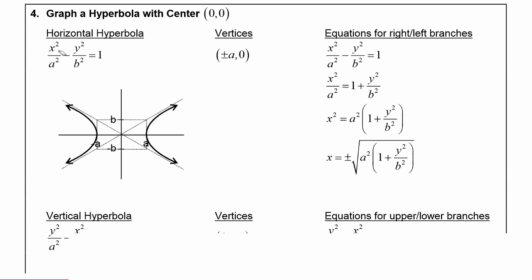In this case, when the x² term comes first, you will get this horizontal hyperbola shown in the picture. Notice that the vertices are at plus and minus a, zero — so here is a vertex at (a, 0) and the other vertex is at (−a, 0).